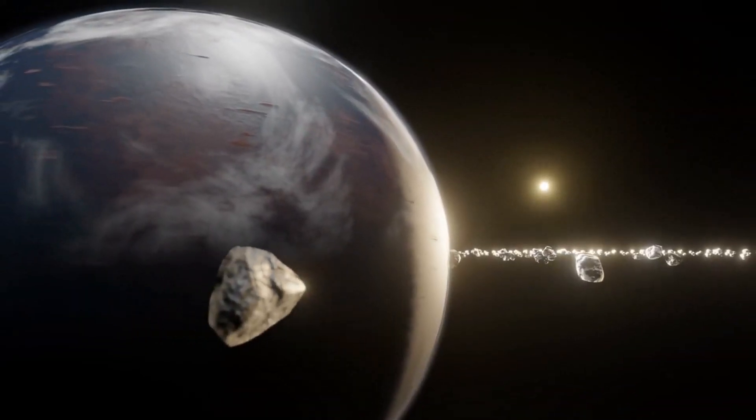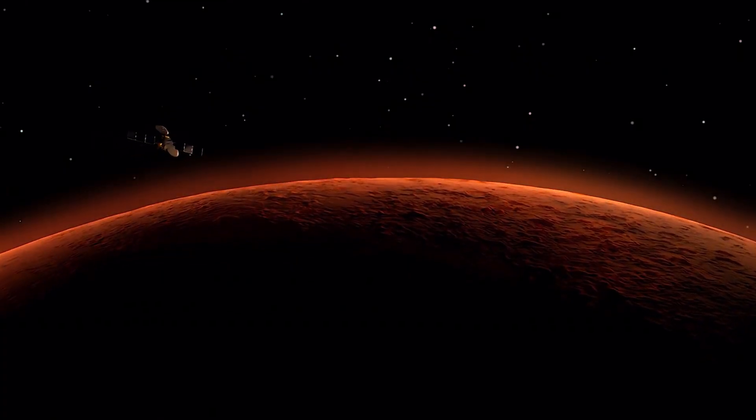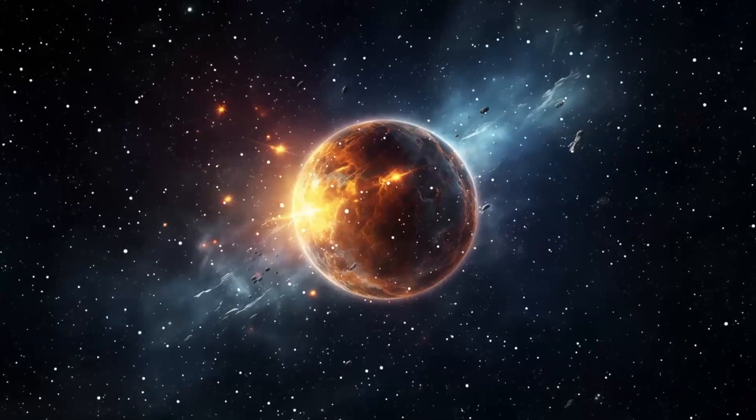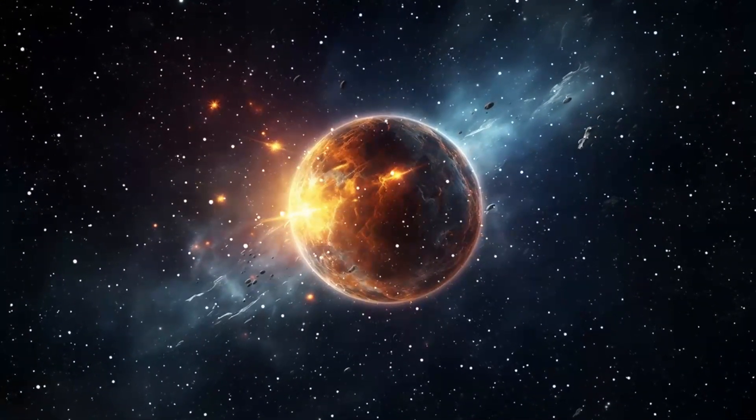A number of the potentially rocky super-Earths we now know orbit stars called M-dwarfs and K-dwarfs, which are smaller, dimmer, and much longer-lived than our Sun.